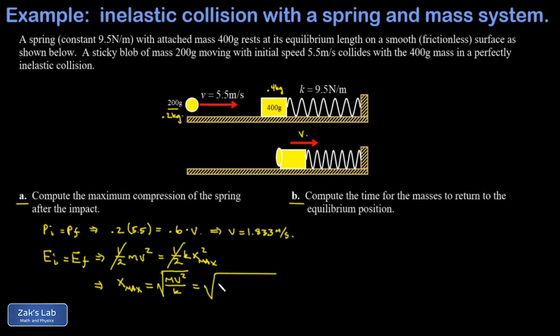Plug in the numbers. We had a mass of 0.6 kilograms moving at a speed of 1.833 meters per second, and we were told in the problem the spring constant is 9.5 newtons per meter. And this gives me 0.461 meters, or it might be a little nicer to write that as 46.1 centimeters maximum compression.